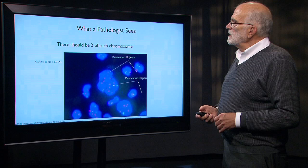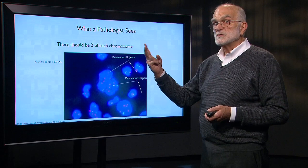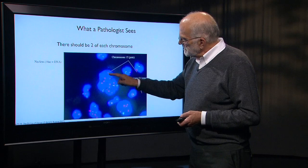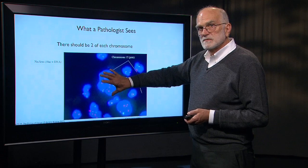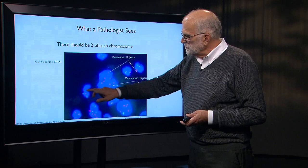If a pathologist looks at a cancer, here's an example of what they might see. The nucleus is in blue, and there ought to be just two of each chromosome. But chromosome 17, labeled in pink, shows cells with only one copy — and one cell has 13 copies of chromosome 17. Looking at chromosome 11 in green, there's one copy in one cell, and three copies in others, and two copies in another. So just at the chromosomal level, there's great variation.